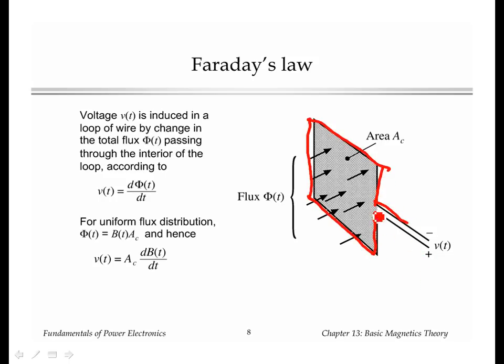Passing through the interior of this loop is some total flux phi, so we have some magnetic flux lines passing through the interior of this loop. Faraday's law says that a changing flux or changing total phi induces a voltage around the loop of wire.